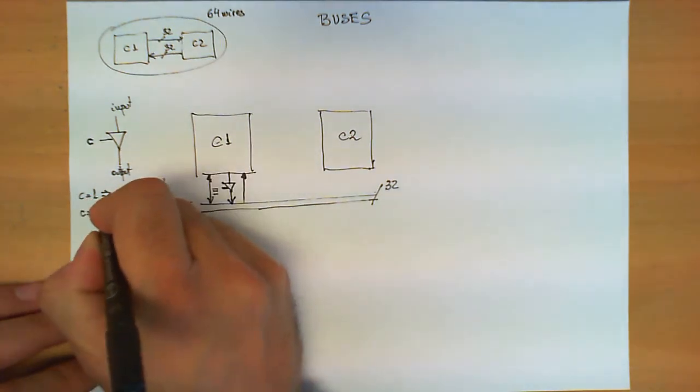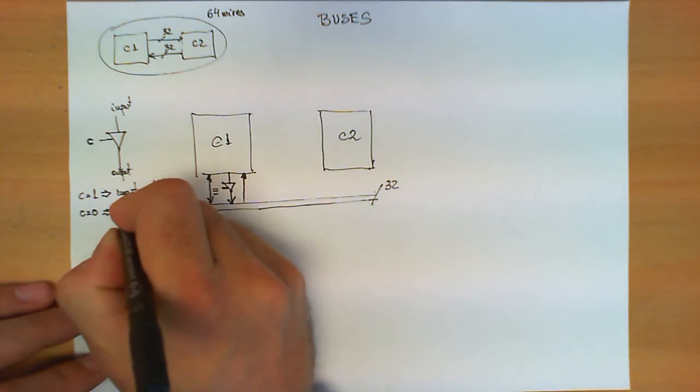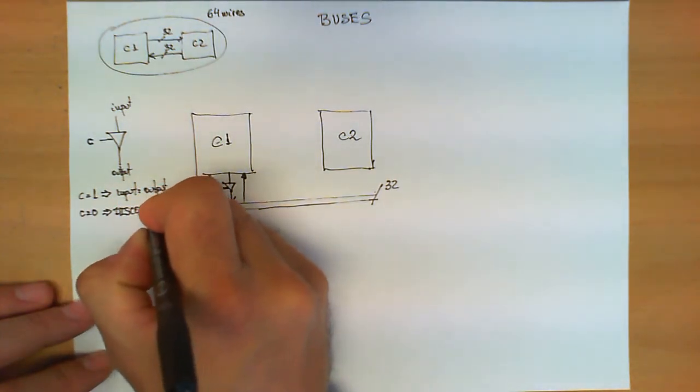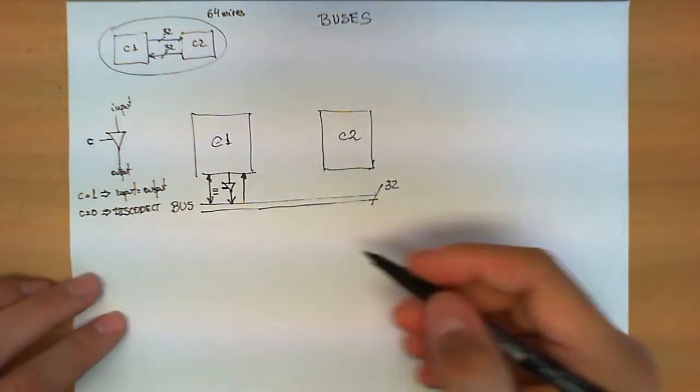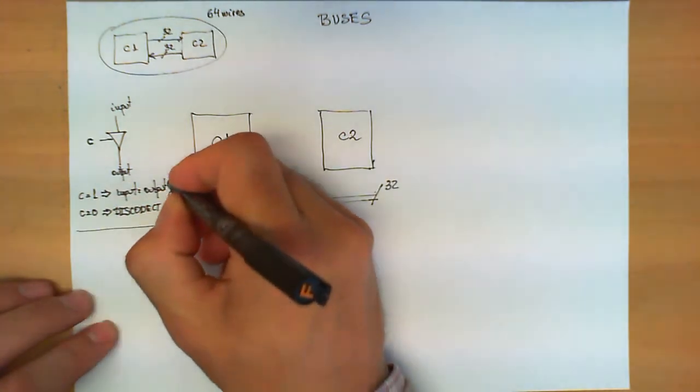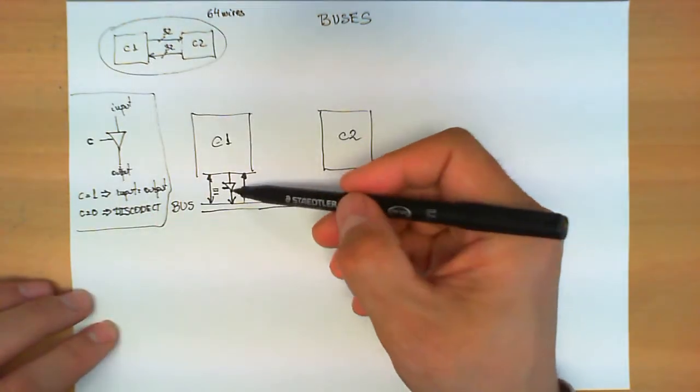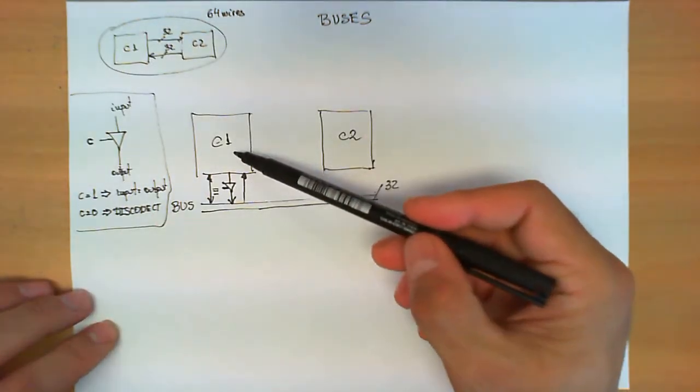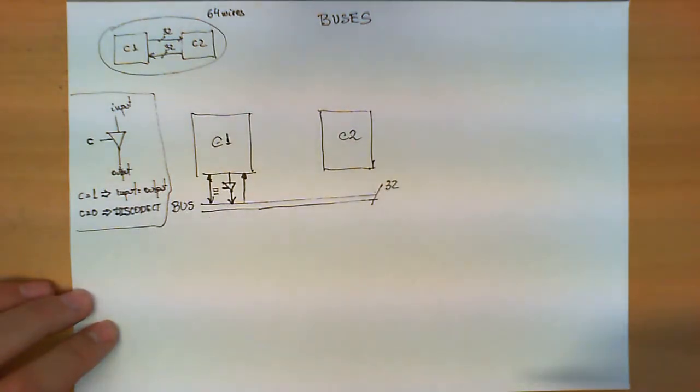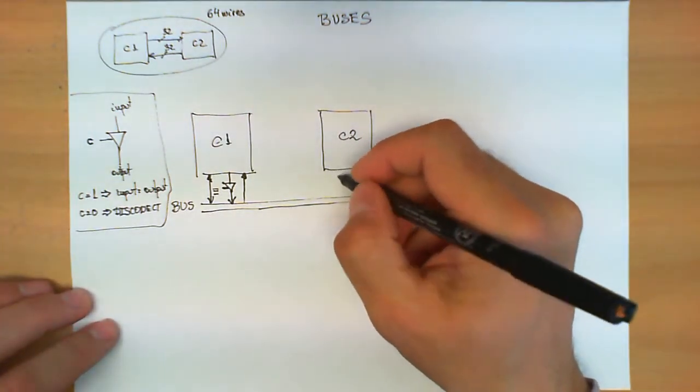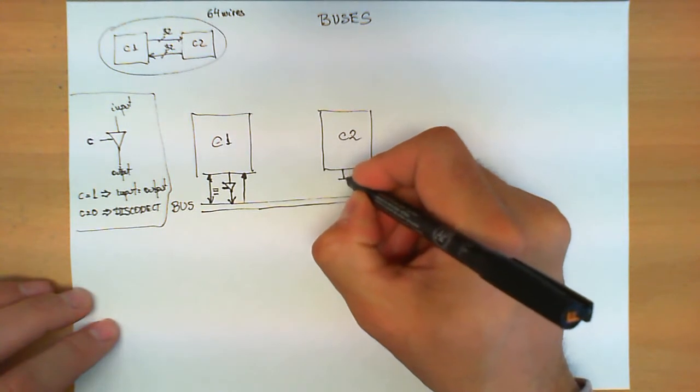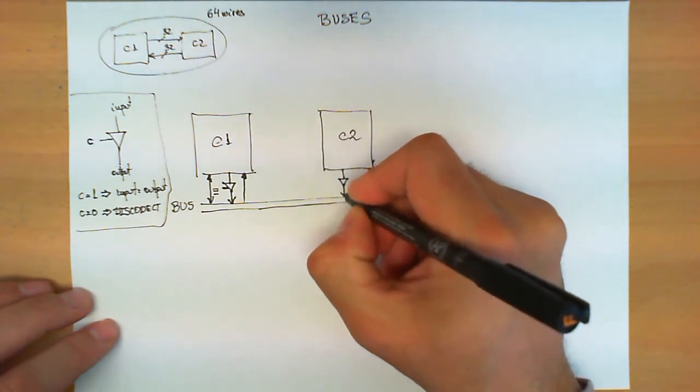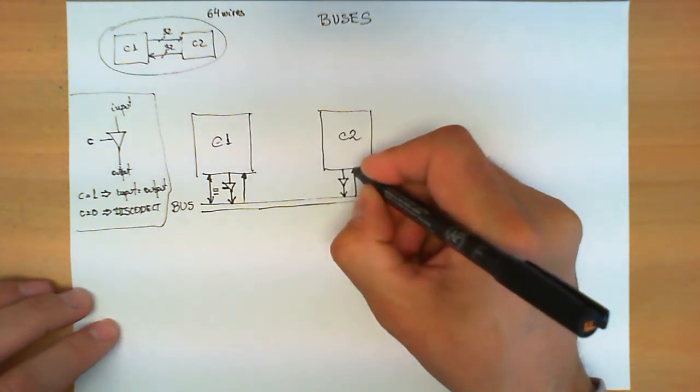If C is equal to 0, and this is the most important part, we have a disconnect. So this circuit offers us the possibility of connecting and disconnecting this circuit from these 32 signals. Now let's suppose we have exactly the same situation here with control signals to write into the bus and reading from the bus.